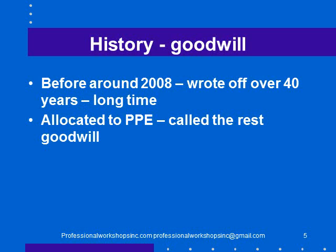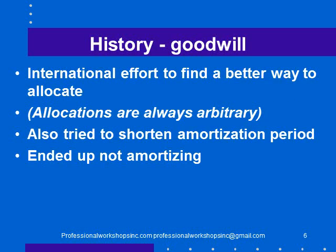We also did things rather arbitrarily. When we bought a subsidiary, we looked at whether property, plant and equipment were worth more than on the books and adjusted for that, and then all the rest was called goodwill. We didn't think about whether there were other assets with a fair value different from book value beyond PP&E. There was then an international effort to find a better way to allocate — though I'll observe that allocations are always arbitrary, so allocating one way versus another isn't necessarily better.